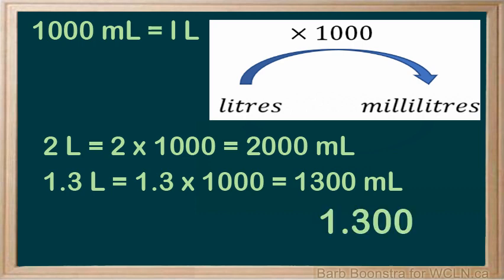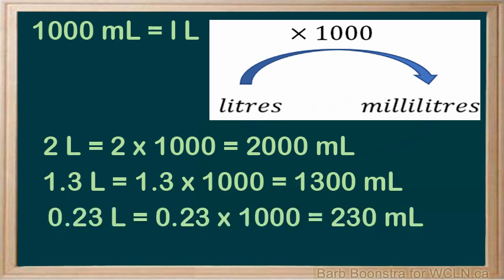To multiply by a thousand, move the decimal three units to the right. Add zeros as necessary. Zero point two three liters would be point two three times a thousand, or two hundred and thirty milliliters.